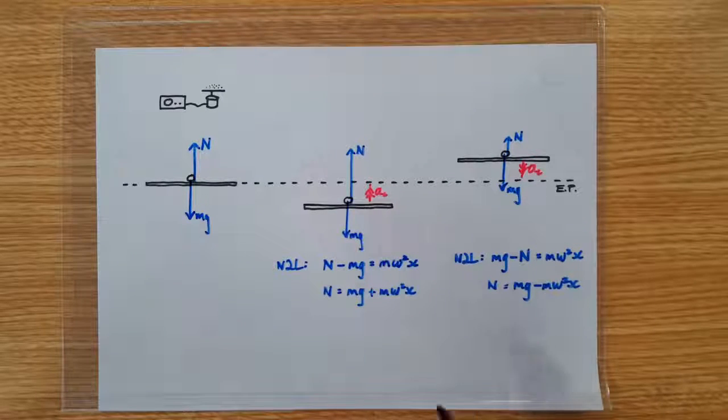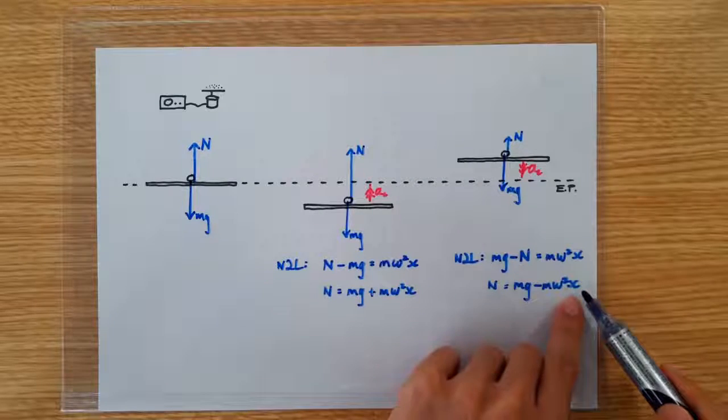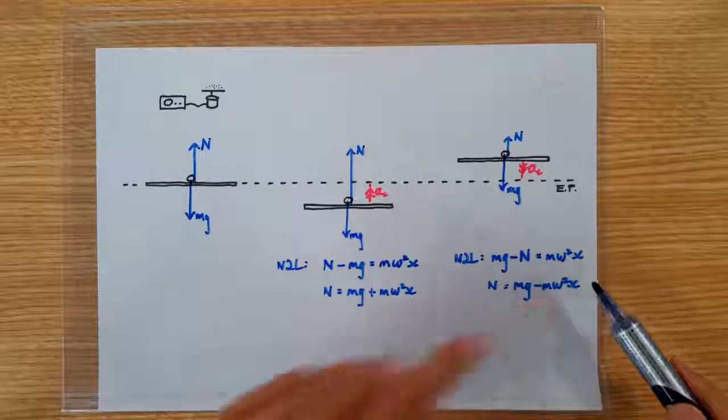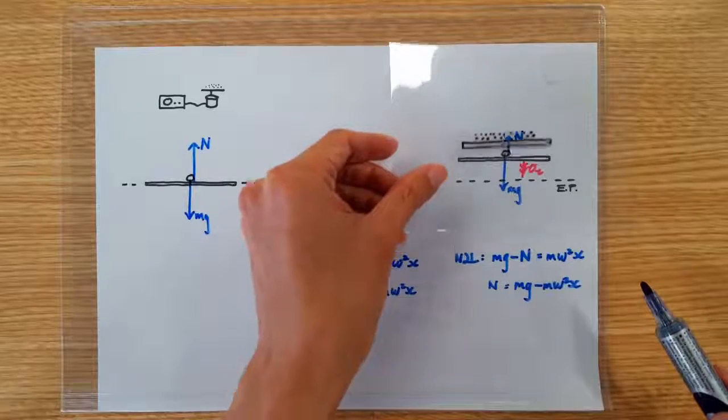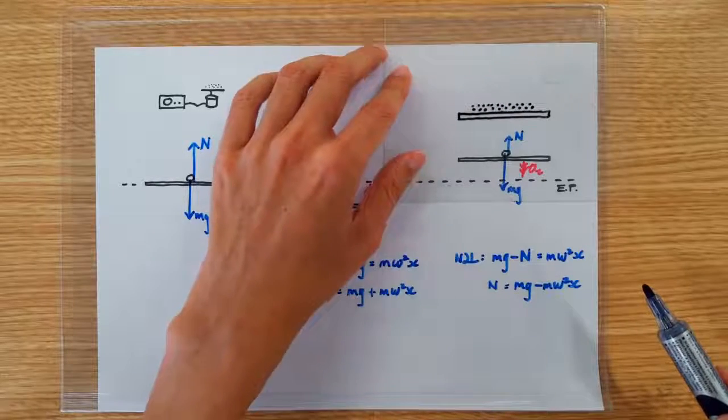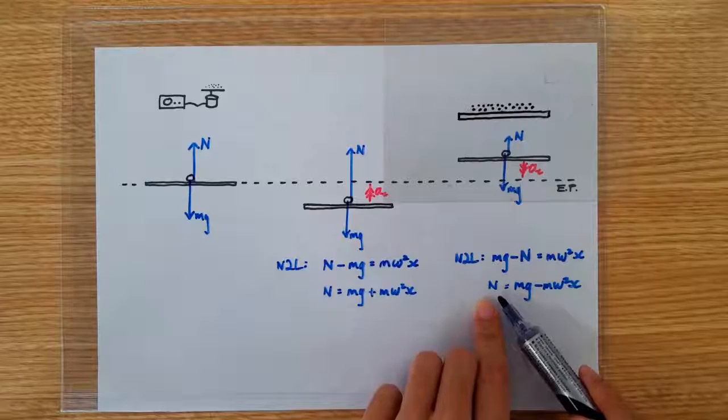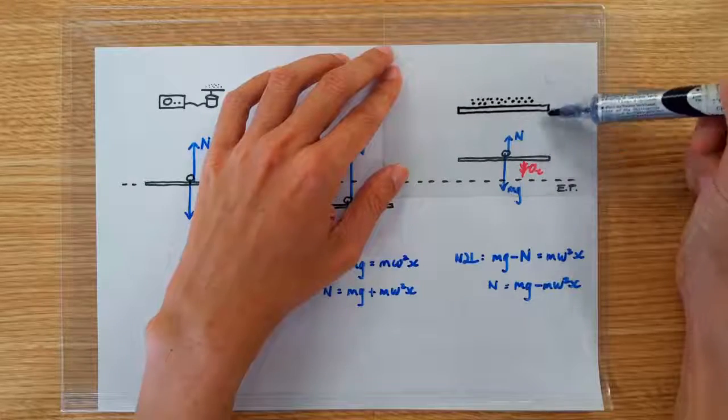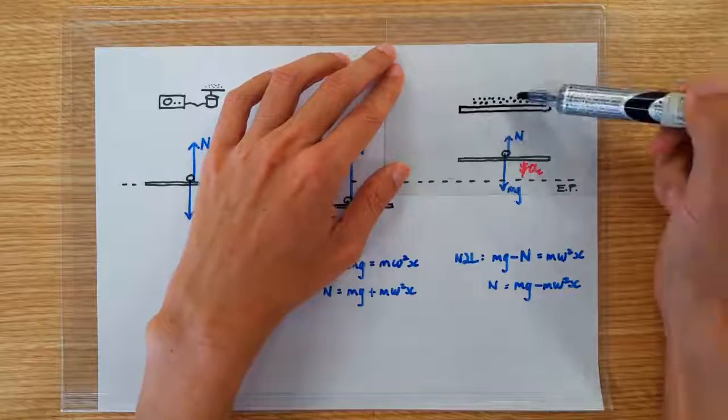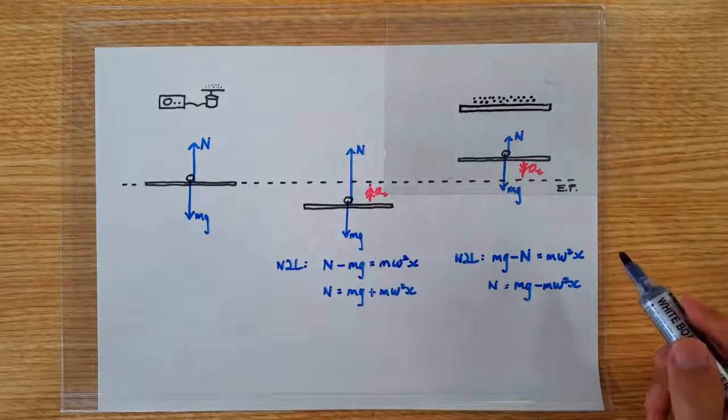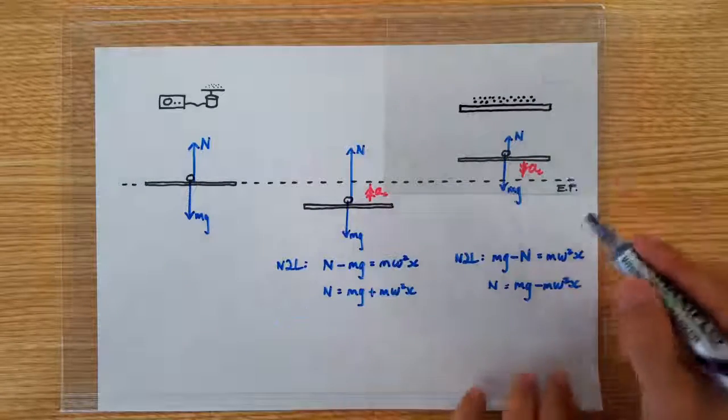So the mathematics seems to suggest that as x becomes larger and larger, that means as we go further and further away from the equilibrium position, the normal contact force will become smaller and smaller. So there should be a limiting displacement when the normal contact force drops to zero and that's when the sand particle is going to lose contact.